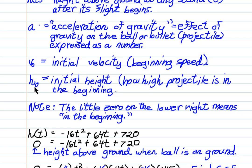h naught is the initial height above the ground, where the ball starts, or the missile starts, or the fireworks start. Note, the little zero on the lower right-hand side means in the beginning. So think of it that way. In fact, it's a zero, but think of it as an o, which means original. That's one way to remember this.